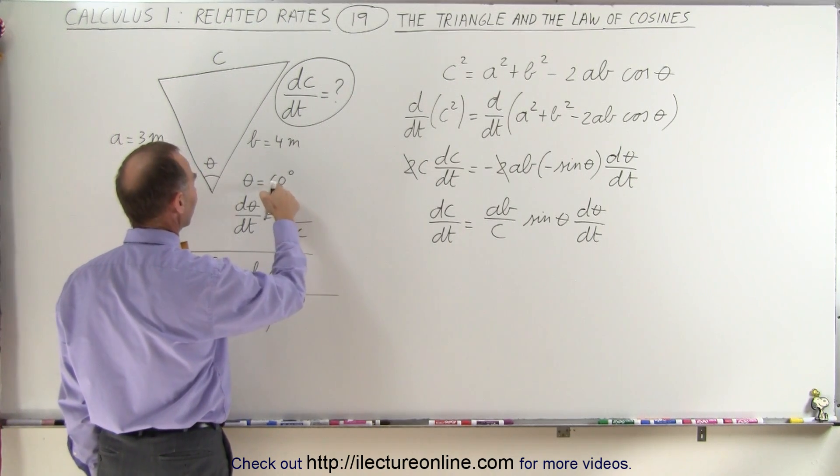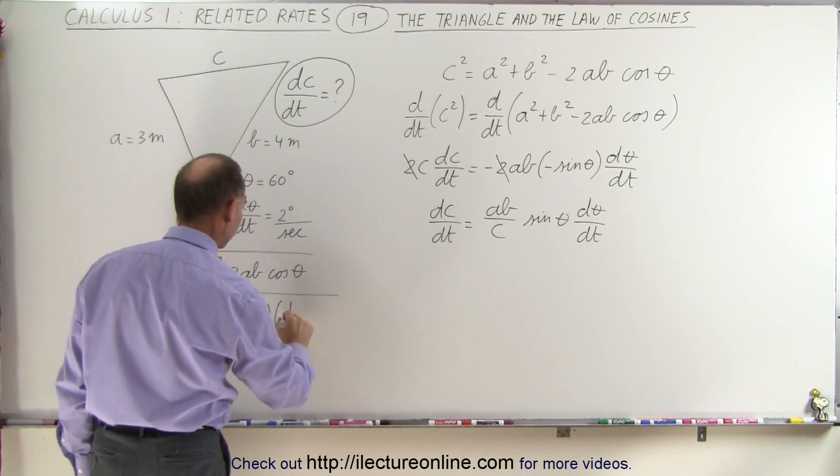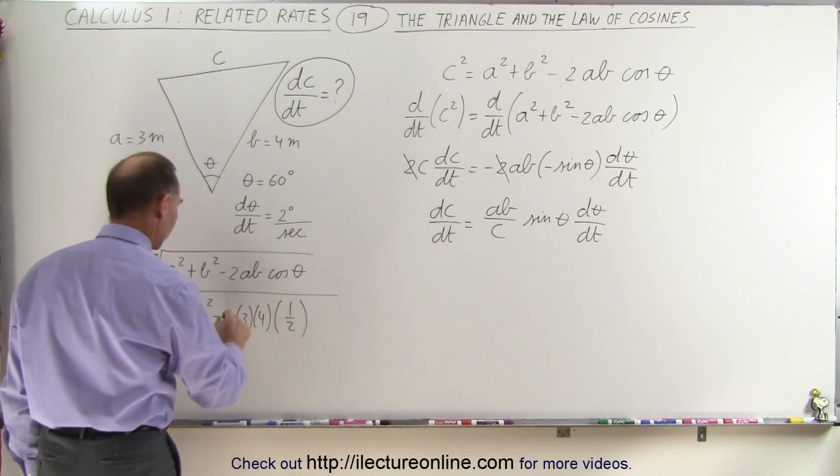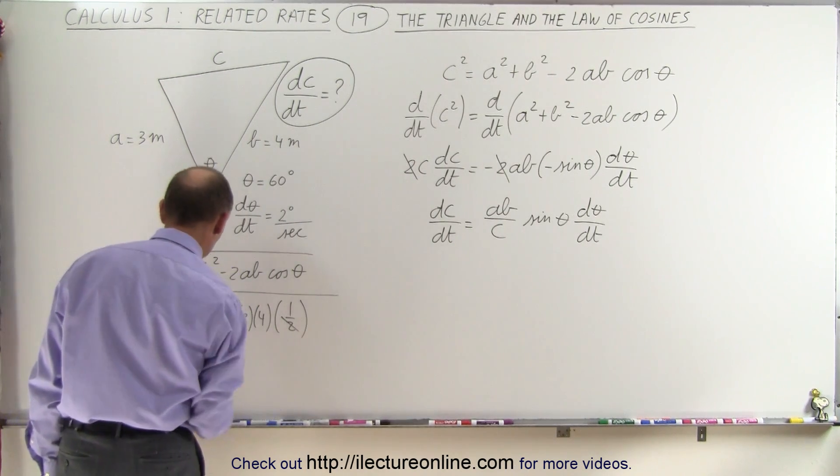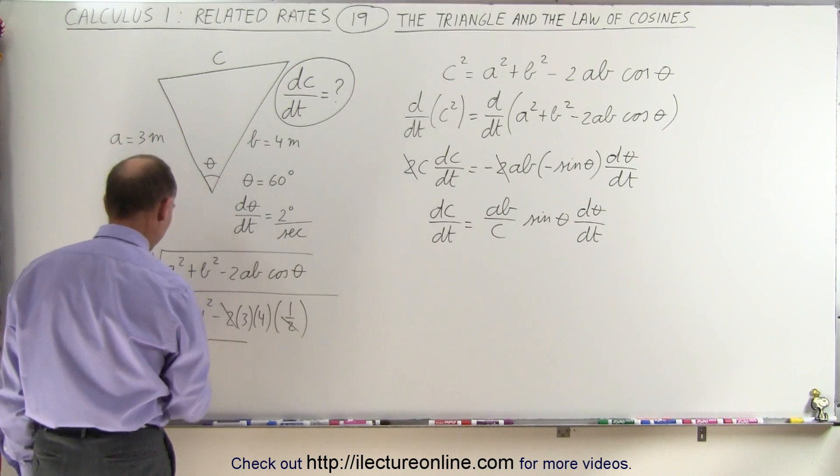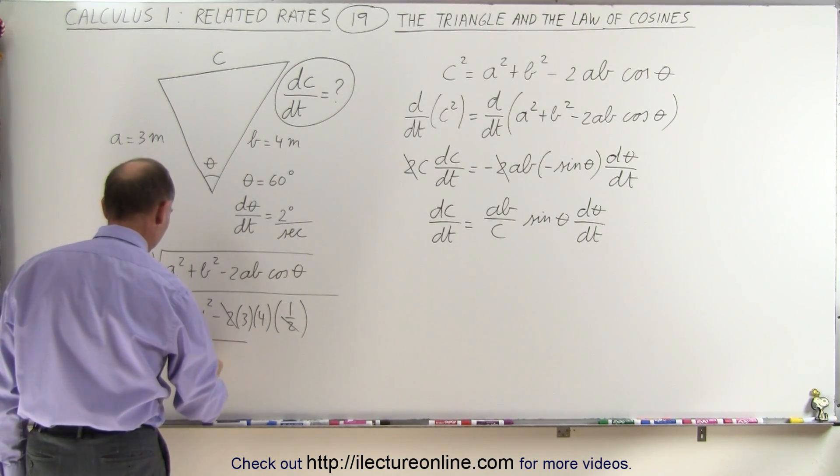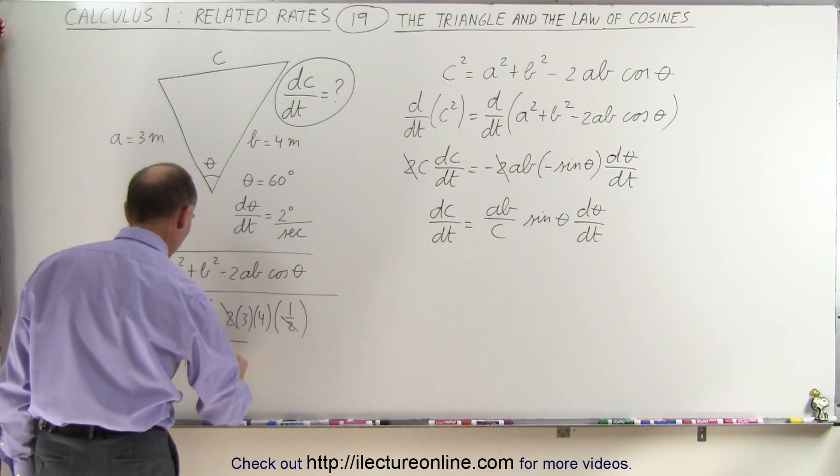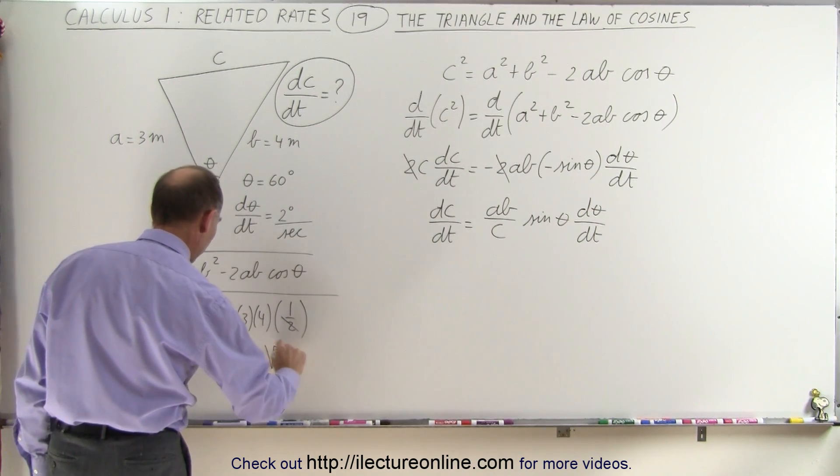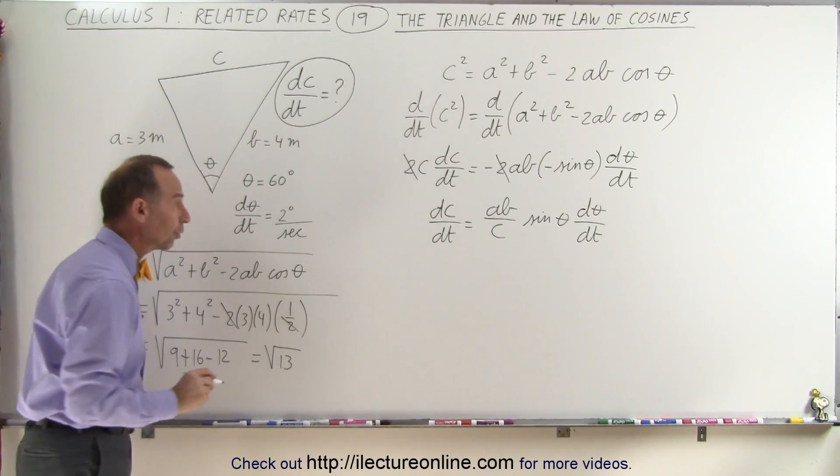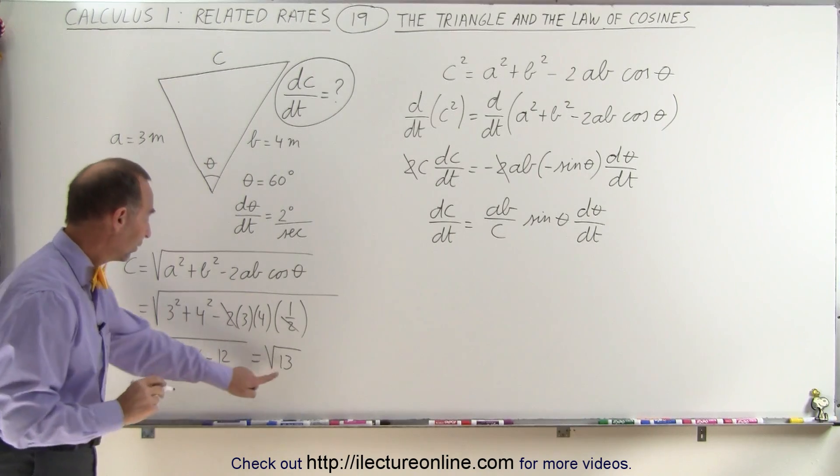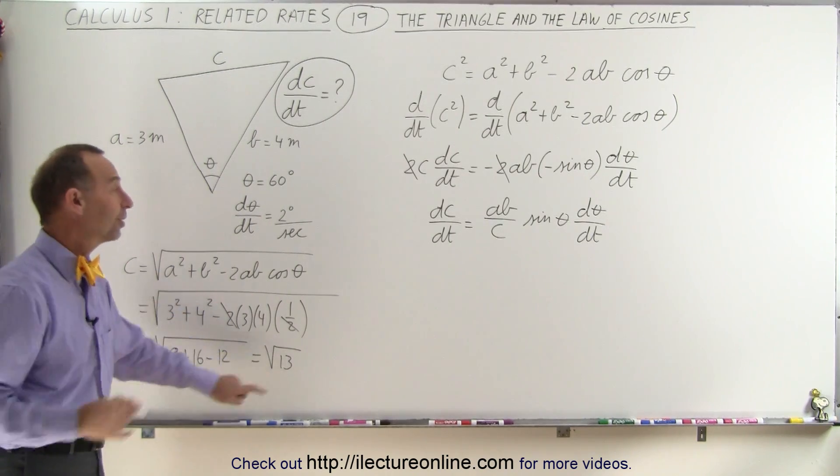Now the cosine of theta, that's 60 degrees, that would be 1/2. This 2 cancels out this 2, that means we're left with the square root of 9 plus 16 minus 12, which equals the square root of 13. So C equals the square root of 13, so now we can continue.